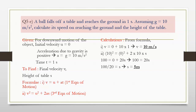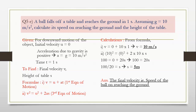So we got both answers. The final velocity, that is, the speed of the ball on reaching the ground is 10 meter per second, and the height of the table is 5 meters.